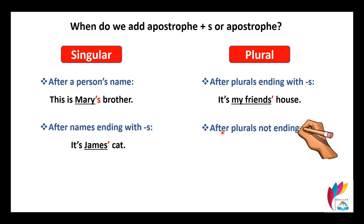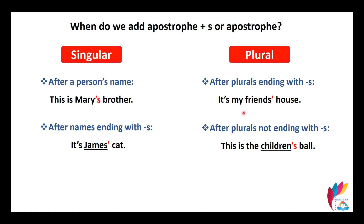The second plural case is after plurals not ending with S, for example 'the children's ball.' Sometimes plurals are irregular — we don't add S but change the word. For example: one child, two children; one man, two men. Since 'children' doesn't end with S, we add apostrophe S. But if the plural already ends with S, we add only the apostrophe.